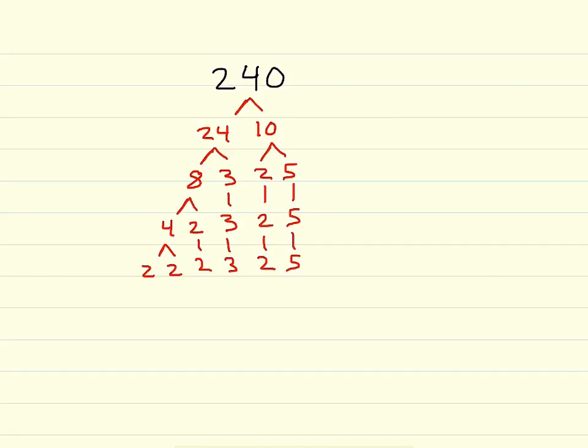There are three things you need to check to make sure you have the correct answer. First, make sure all of your factors are prime — and 2, 3, and 5 are all prime. Next you need to write them in order from least to greatest with multiplication signs in between. So we have 2 times 2 times 2 times 2 times 3 times 5.